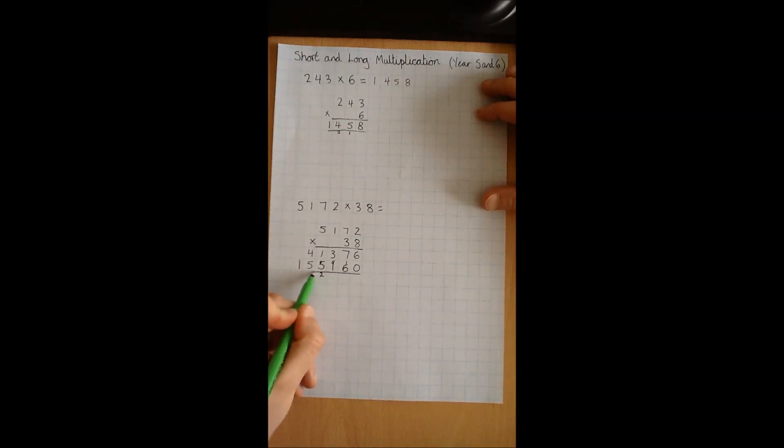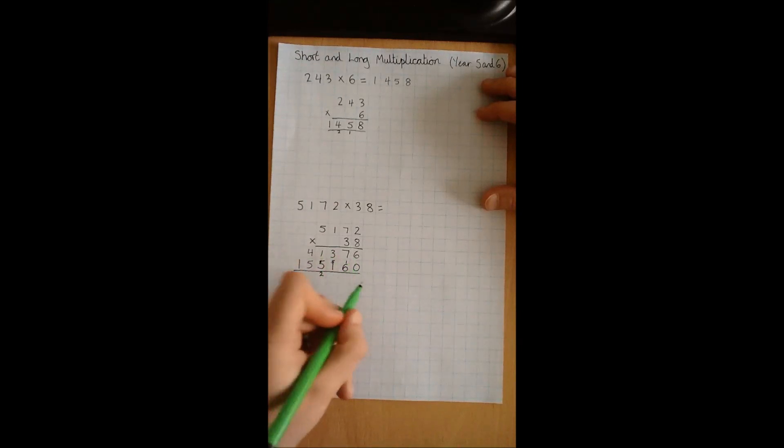Then the final stage of the calculation just requires us to add together the two numbers we've got so far. So 6 plus 0 is 6. 7 plus 6 we know is 13. Carry the 1. 3 plus 1 is 4, plus the 1 we carried is 5.